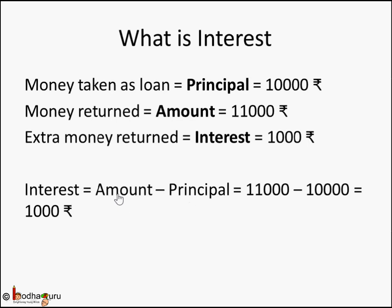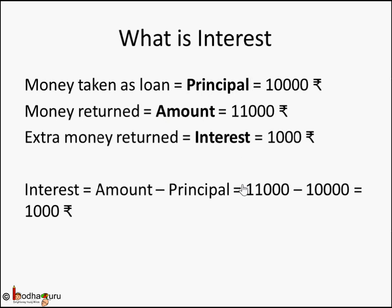The amount returned in case of a loan minus the principal (the initial amount received as loan) gives us the interest. Sukram returned 11,000 rupees after one year for the loan he took of 10,000 rupees. So 11,000 minus 10,000 is 1,000 rupees interest. These are important terms to remember: principal is the initial value, amount is the final value, and interest is that extra money.